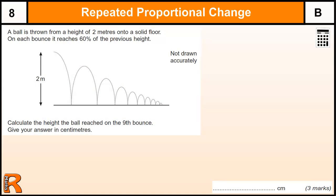This is a repeated proportional change question. We have a ball bouncing, starts off at 2 meters and it bounces up to 60% of where it was before. Then it bounces 60% of that last value and again 60% of that and so on. So you are repeatedly finding 60% of the previous value.